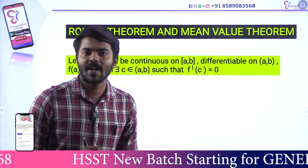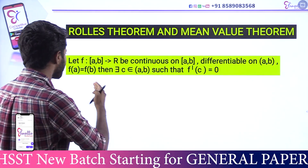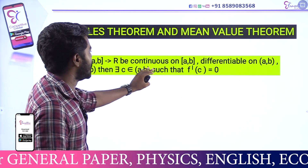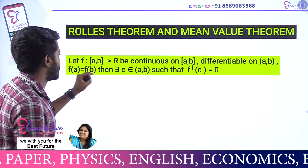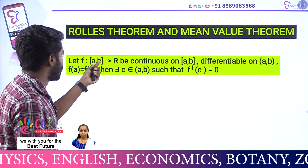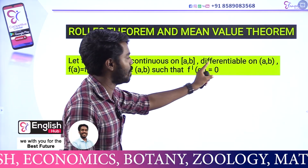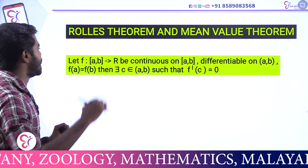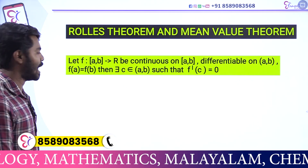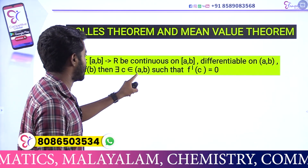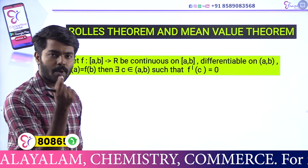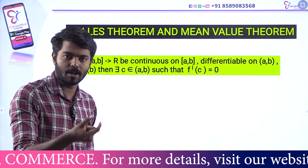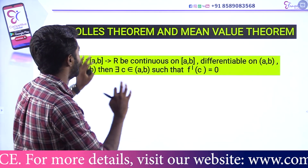What is the theorem? The theorem is Lagrange's Mean Value Theorem. Let F be a function from closed interval [A, B] to R, continuous on closed interval [A, B] and differentiable on open interval (A, B). Then there are two conditions: if F of A is equal to F of B, then there exists a point C in the open interval (A, B) such that F' of C is equal to 0. That function has a derivative of 0. This is Rolle's Theorem.